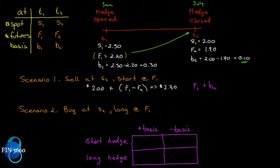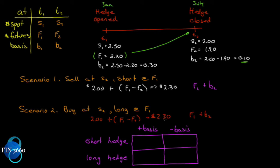In the long hedge, we pay S2 = $2.00 for the asset — good news. But we add the loss on the futures contract: F1 − F2 = $0.30, which increases our effective cost. So we pay $2.00 + $0.30 = $2.30. Notice that in both the short and long scenarios we end up at $2.30 — we've locked in a price, but it equals F1 plus B2.